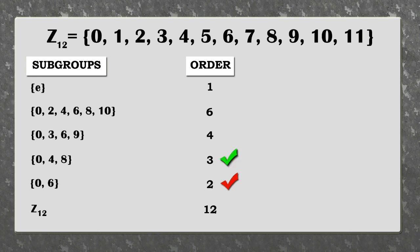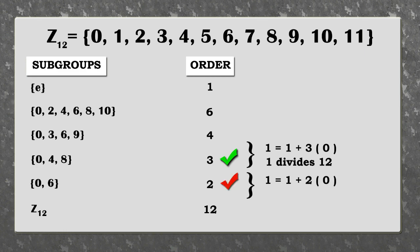So the number of Sylow 3-subgroups is one plus a multiple of three, which divides the order of the group, while the number of Sylow 2-subgroups is one plus a multiple of two, which again divides the order of the group.